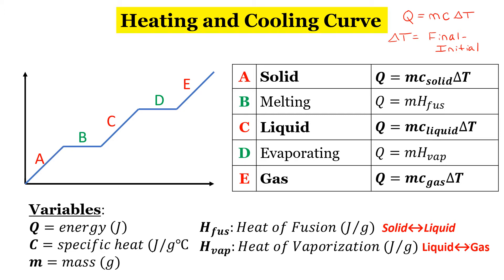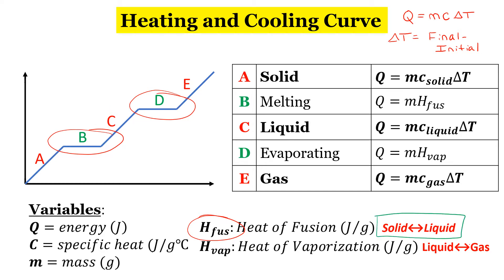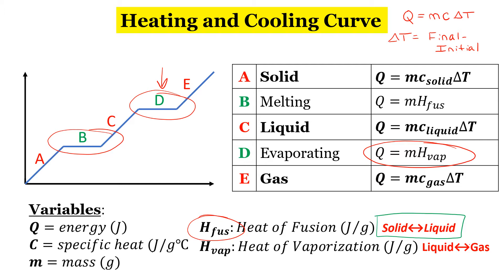On the graph, any time we have a plateau, that's a phase change, so we have a slightly different equation for that. The heat of fusion occurs any time we are moving between solid and liquid — whether going from solid to liquid or liquid to solid. At point B on the graph, we're going from solid to liquid, so we use the heat of fusion equation. At point D on the graph, we use the heat of vaporization because we are going from liquid to gas. That equation is also used any time you go from gas to liquid.